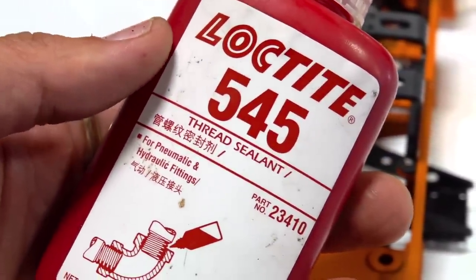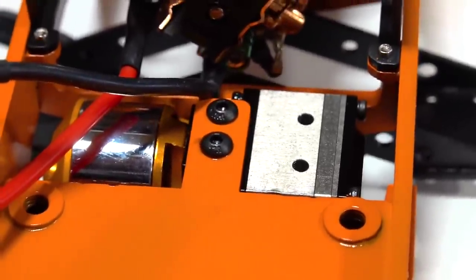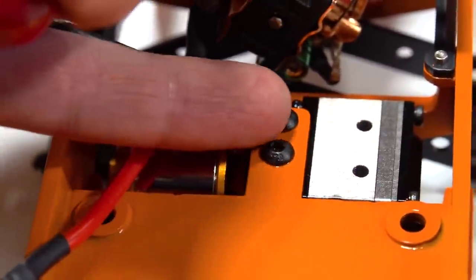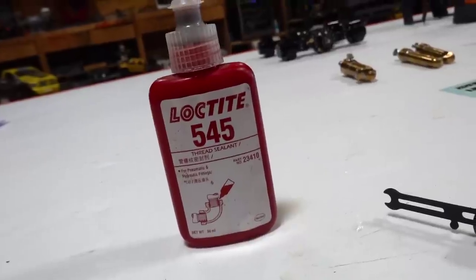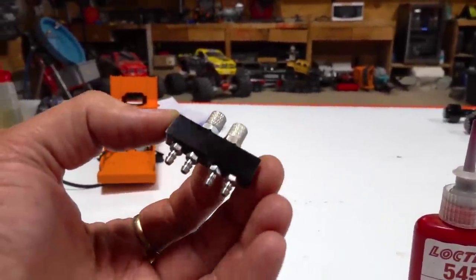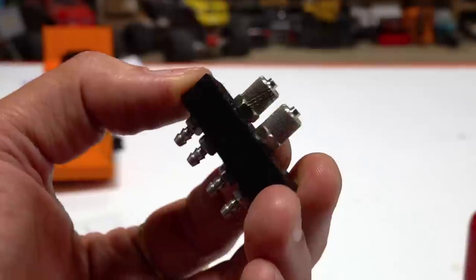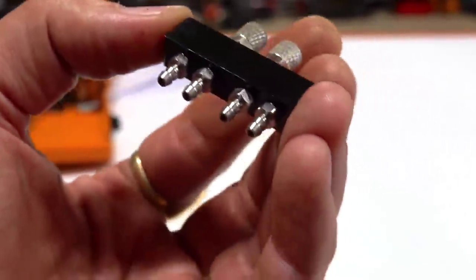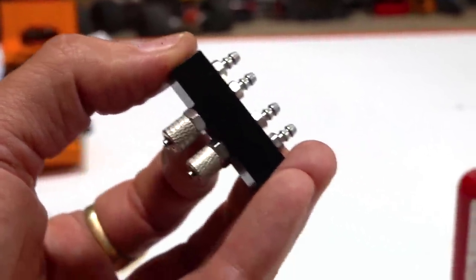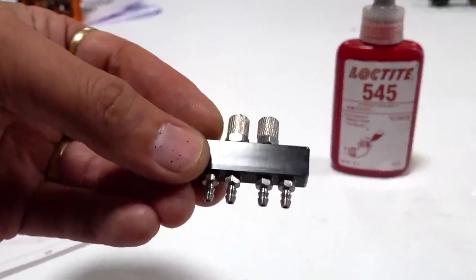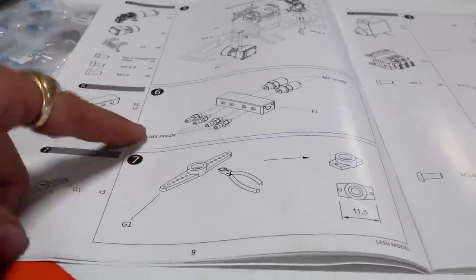Okay, for those screws, I use the Loctite 545 thread sealant for hydraulic fittings. Not that it's necessary. You can get away with just normal blue Loctite if you want, but I just use that. Once I start getting into the hydraulics and knowing that this is all going to be vibrating, I make sure everything is locked down real nice. Now, speaking of this Loctite 545, I'll try to find some and put it in the video description box. This leads right into this distribution block. Look at this. Two M5 nozzles right on the end here, or fittings as they'd say. They call them nozzles in the book. And then you got these M3 fittings, or nozzles as they call them in the book.